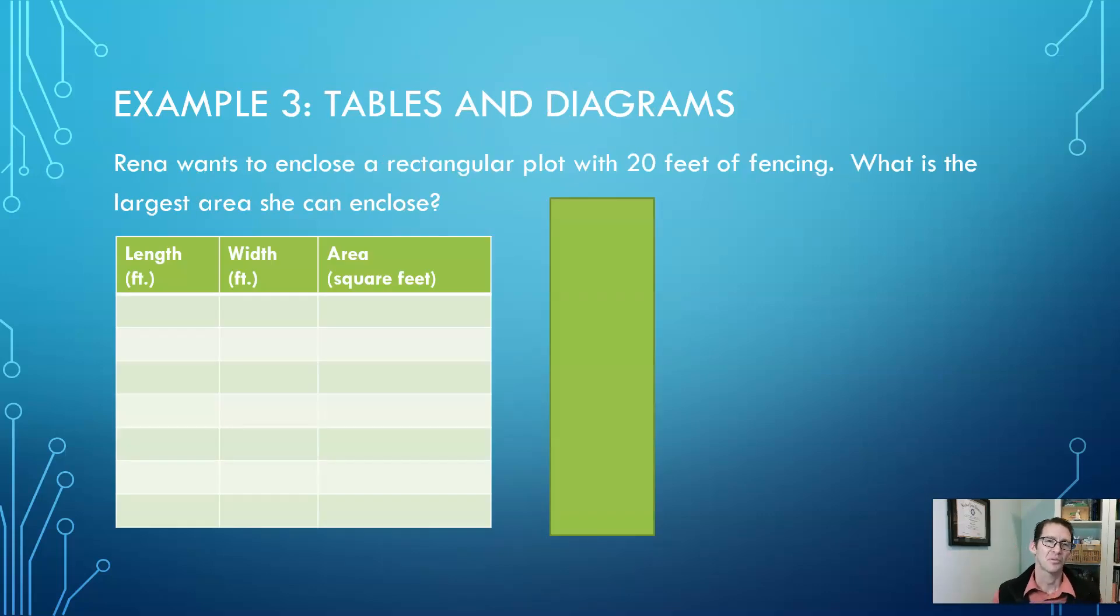Now let's do our example three, and in this case we're going to be looking at tables and diagrams together. Rena wants to enclose a rectangular plot with 20 feet of fencing. What is the largest area she can enclose? Well, the first thing I would do is draw a diagram, and I did that before we filmed this video. So here's my diagram and I've got a length and I've got a width. So why don't I call this my length right here and I'll call this my width.